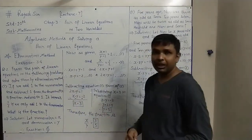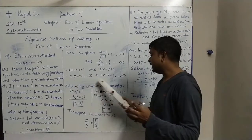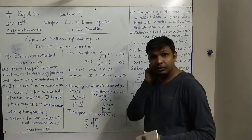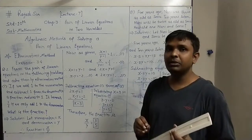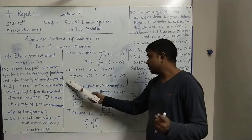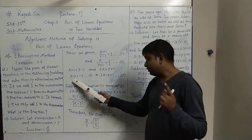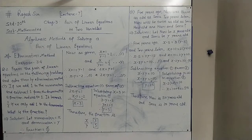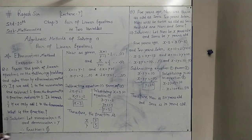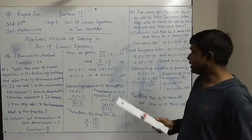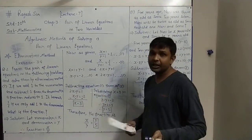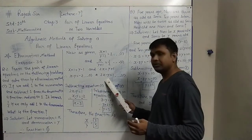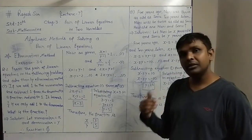As this method's name is elimination method and we have two variables x and y, we have to eliminate one of the variables — either x or y. For that, the coefficient of x or y must be equal. Here the coefficient of y is the same in both equations, so we can directly eliminate y. Both have minus y, so we subtract one equation from the other to eliminate y.